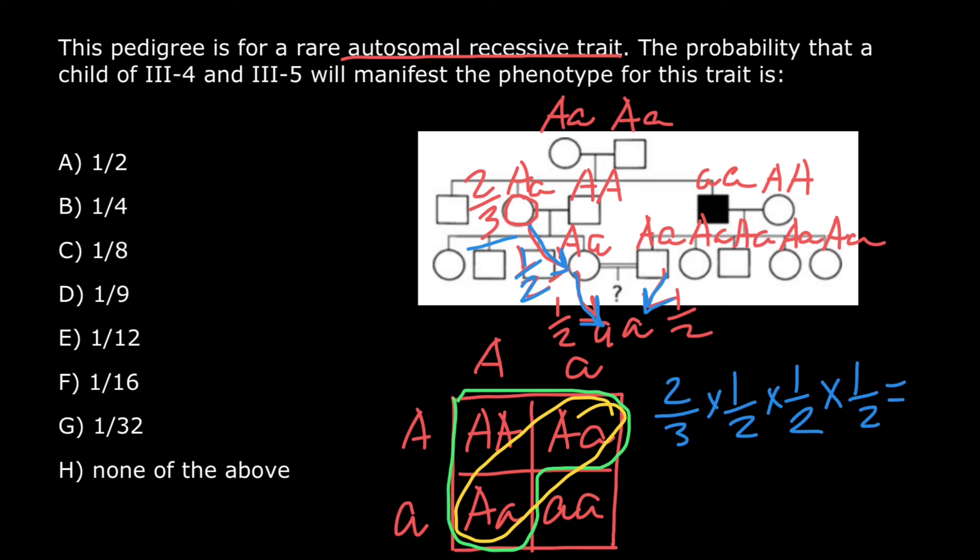So our answer is going to be 2 over 24, or we can divide numerator and denominator by 2. And we are going to get 1 over 12.